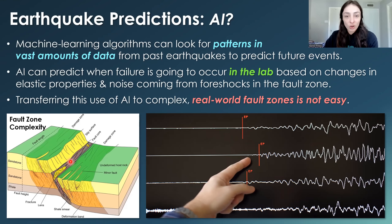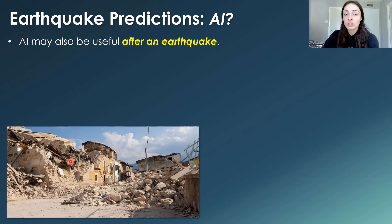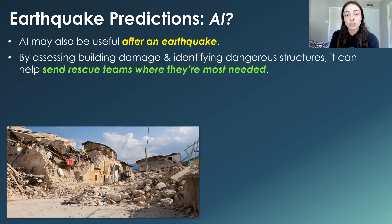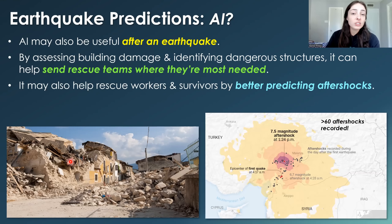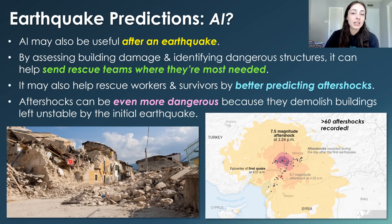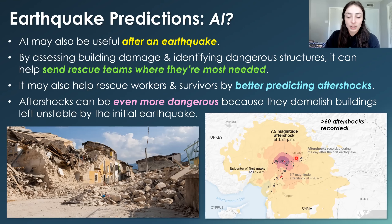AI might not only be able to predict earthquakes but also be useful after they occur — by assessing building damage and identifying dangerous structures, it can help send rescue teams where they're most needed faster. It may also help rescue workers and survivors by better predicting aftershocks and getting people to safer locations. This is extremely important because aftershocks can be even more dangerous than the initial earthquake, demolishing buildings left unstable by the first event. As you can see in the map of Turkey and Syria, there were over 60 aftershocks recorded.